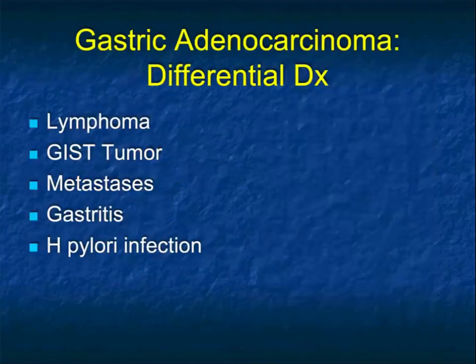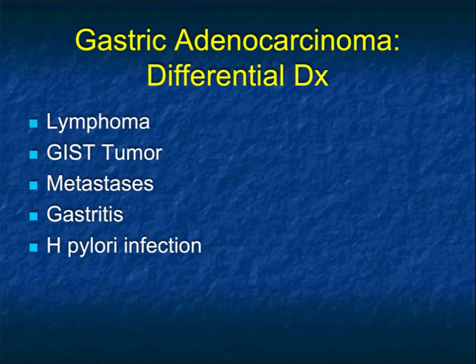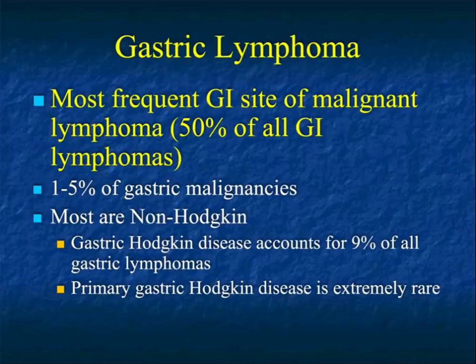We left off last time speaking about what the potential differential diagnosis would be for gastric adenocarcinoma. Typical things we think about would be lymphoma, GIST tumors, perhaps metastasis, gastritis, H. pylori infection, and a number of other possibilities.